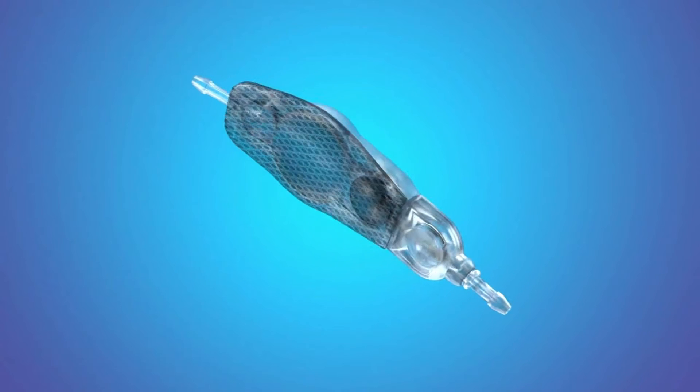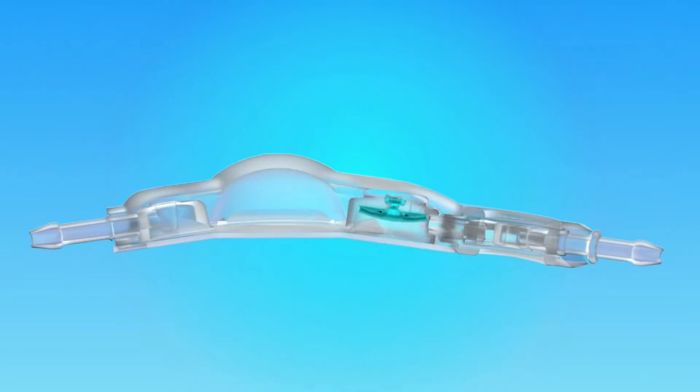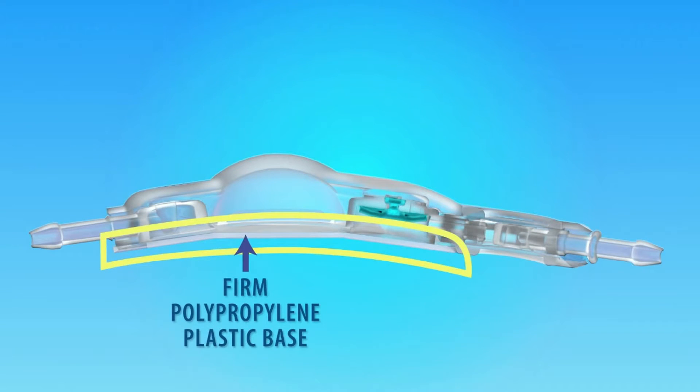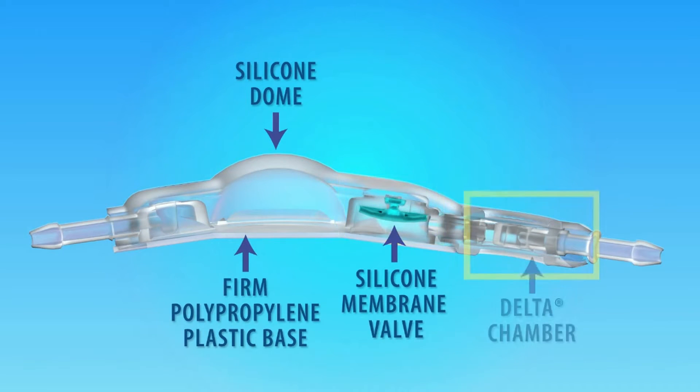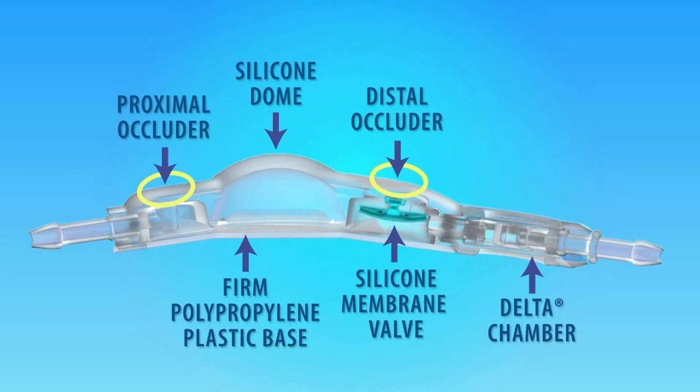The Medtronic Delta Valve consists of a firm polypropylene plastic base, a silicone dome, a silicone membrane valve, and a distal delta chamber component which provides siphon control when the patient is in an upright position. The Delta Valve also has proximal and distal occluders for selective flushing.